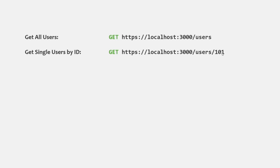Route parameters are the dynamic part of the URL. In this URL, the part http://localhost:3000/users is static — it will not change. But after that, the value 101 can change to some other value. So this part of the URL will be dynamic, and this can be achieved with the help of route parameters.